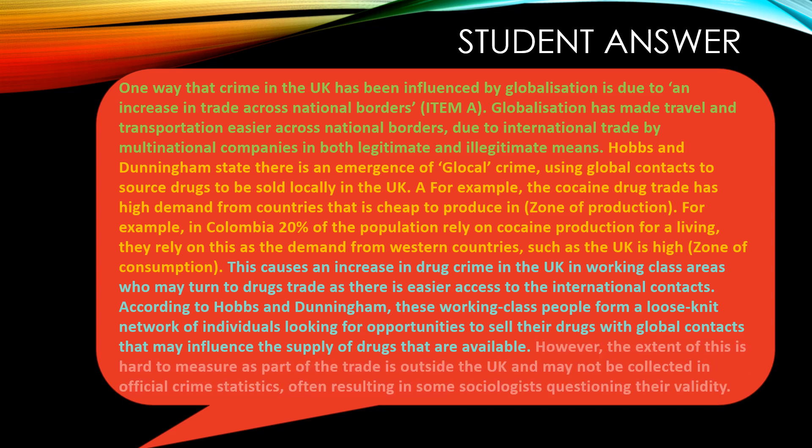Finally, at the end there is a little bit of evaluation. The extent of this is really hard to measure because a lot of the trade is outside the UK and may not be collected in official crime statistics. It is also important to note there is a logical chain of explanation: the student compares the zones of production in Colombia with the zones of consumption in the UK, and compares the local links with the global connections — which in itself demonstrates analysis marks.